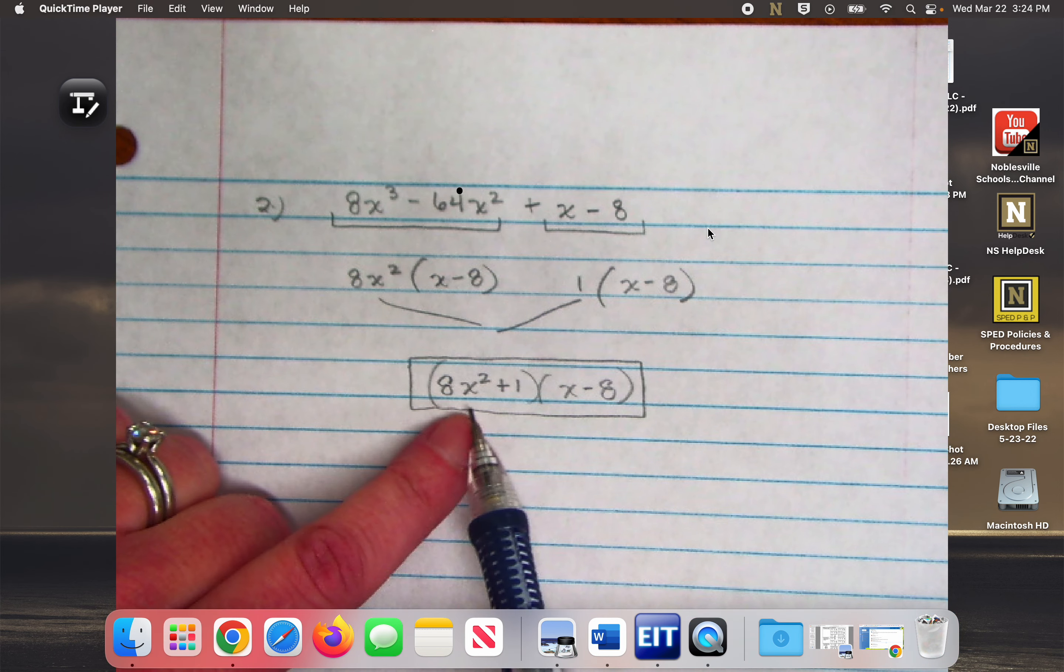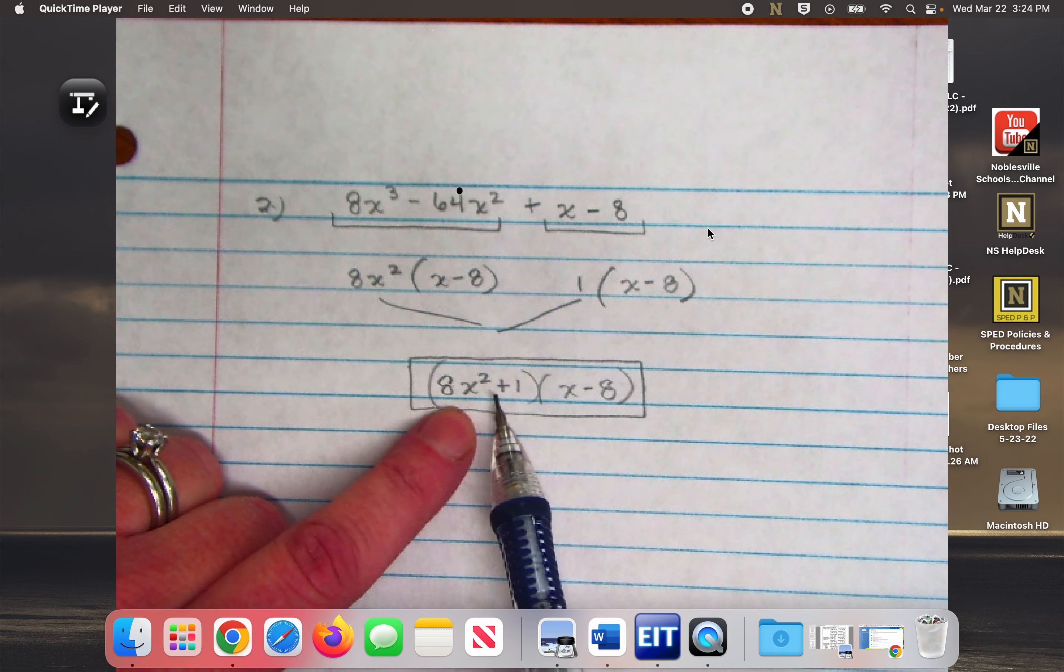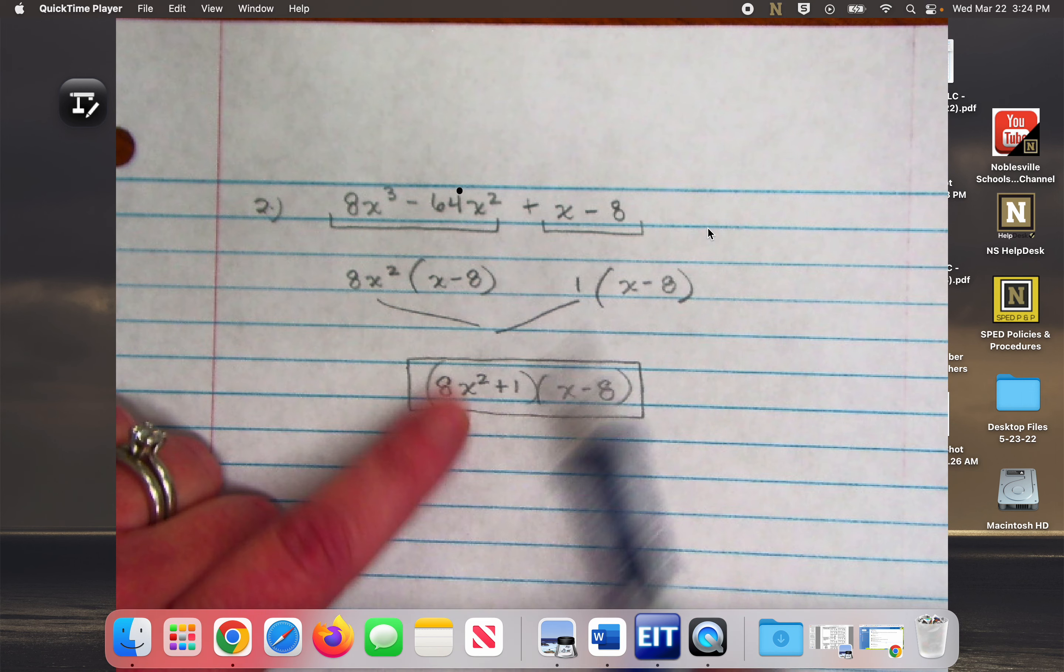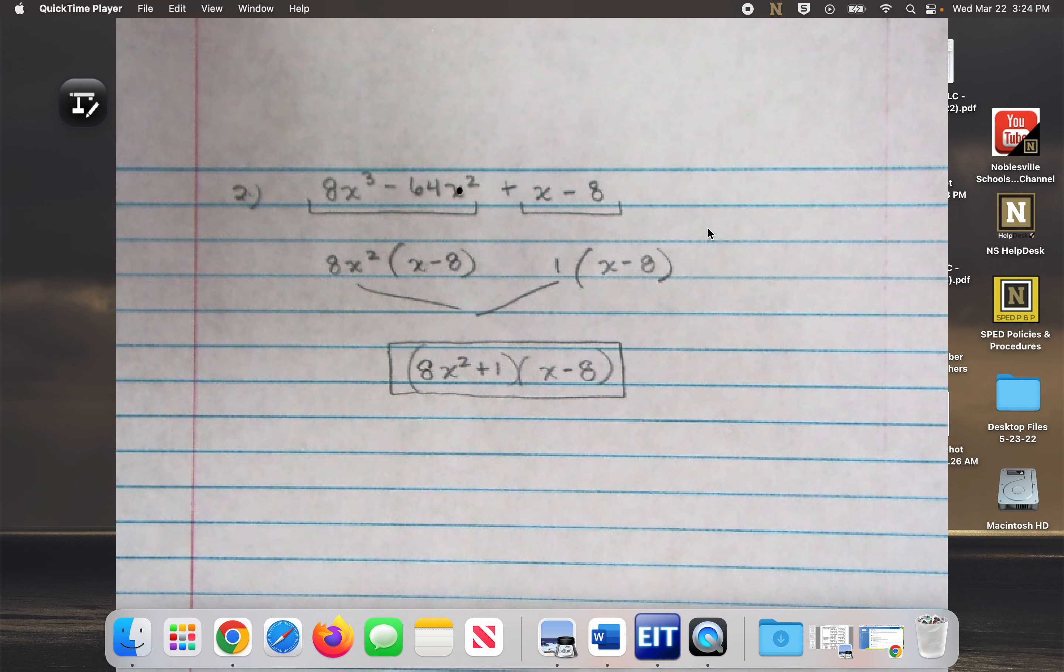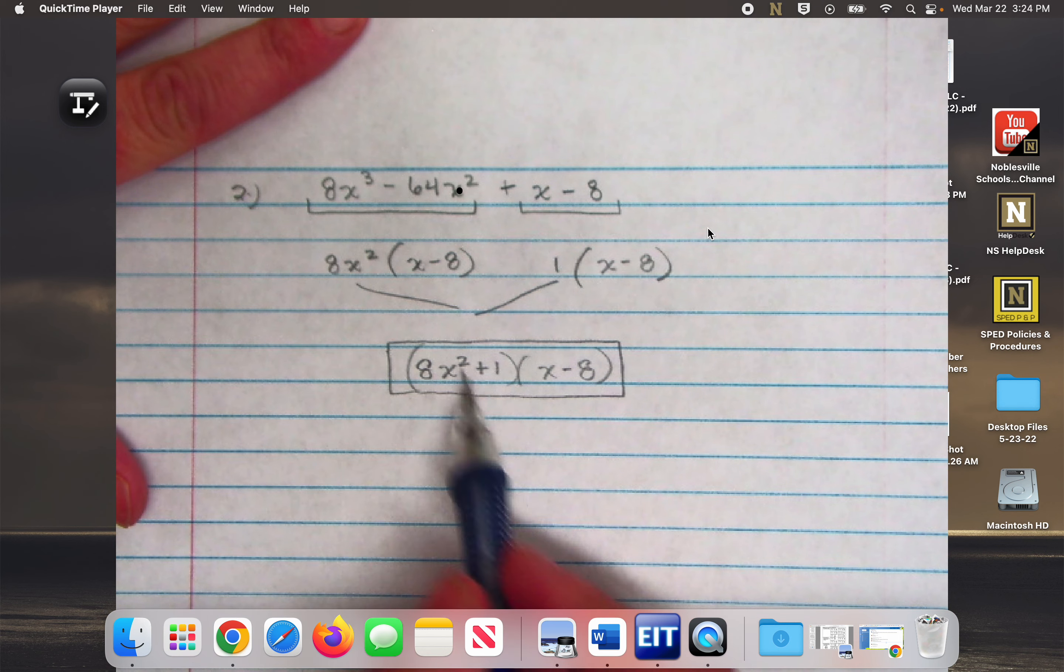I can't just have 8x in this quantity, like that would not foil correctly. So you have to remember to sometimes take out a 1 to finish up that quantity. You would figure it out pretty quickly if you tried to foil. You'd be like there's something missing. I don't have a second term here.